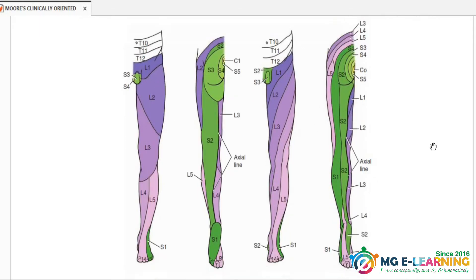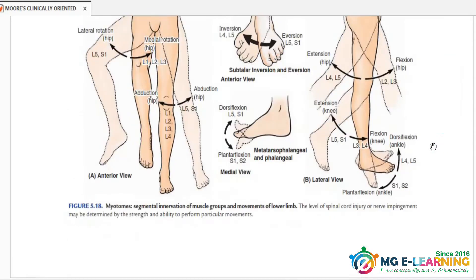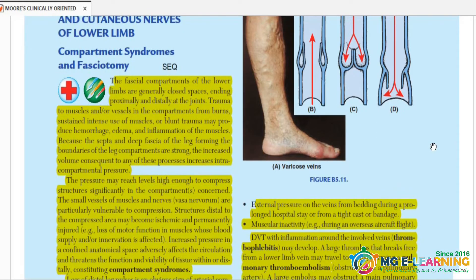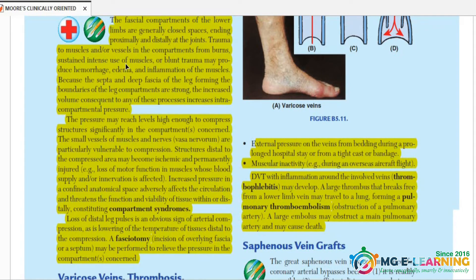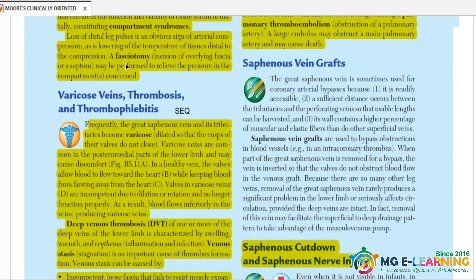Now move on to the clinical box. First one is the compartment syndrome and fasciotomy. It is important for SQ and MCQ point of view. Next is the varicose vein, thrombosis, and thrombophlebitis. It is very important for SQ and MCQ point of view.